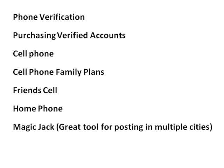Another way to get a verified account is to use your home phone number if you have one. Once you've used up all your friends and family, you can go get Magic Jack. Magic Jack is $20 per year — basically $20 for a phone line. For $100, you could purchase five different phone numbers, verify your accounts with them, then close out those phone numbers and be done with it.